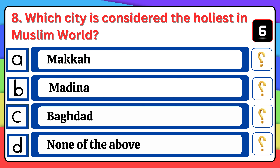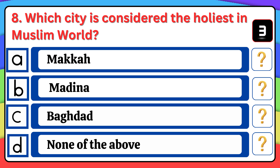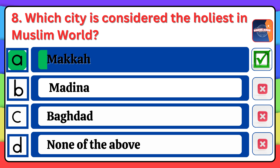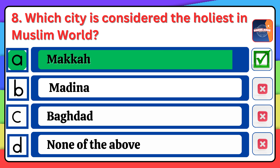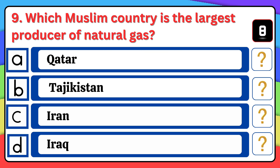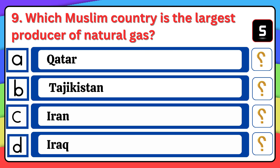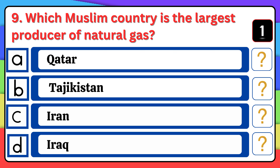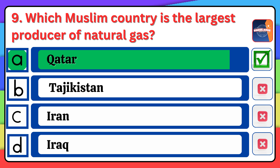Which organization represents the Muslim countries? The right answer is option A, OIC. Which city is considered the holiest in the Muslim world? The right answer is option A, Mecca.